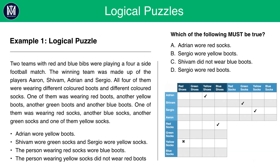Here I've shortened the information down to just what you need. There are three columns: names, shoes, and socks. It may look unique as a table but if you look closely it will make sense. In this crosshatch table, I've filled in Adrian having yellow shoes, Shivam having green socks, and Sergio having yellow socks. I've then used the relevant rows to record that the person wearing red socks wore blue boots, and that the person wearing yellow socks did not wear red boots.